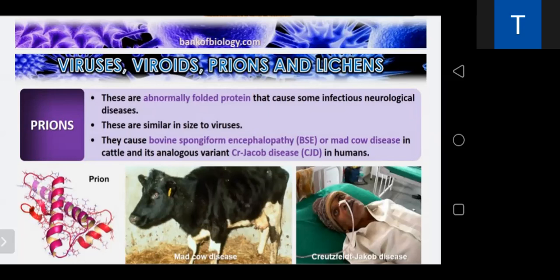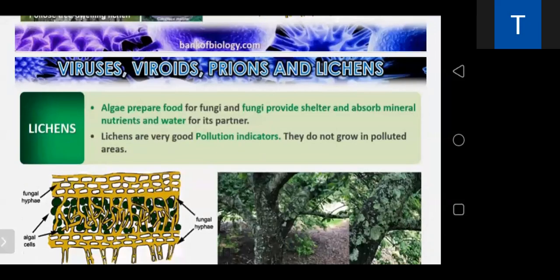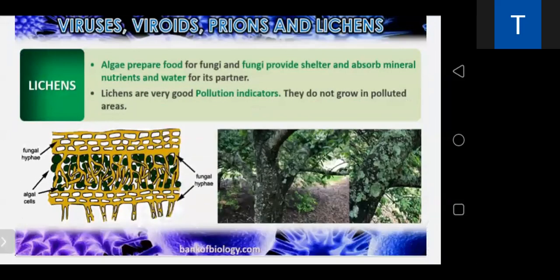This chapter is now complete. Bacteriophages are viruses of bacteria. Algae prepare food for fungi, and fungi provide shelter and absorb mineral nutrients and water for their partner — this is the lichen relationship. Lichens are very good pollution indicators; they do not grow in polluted areas. From my side this chapter is over.